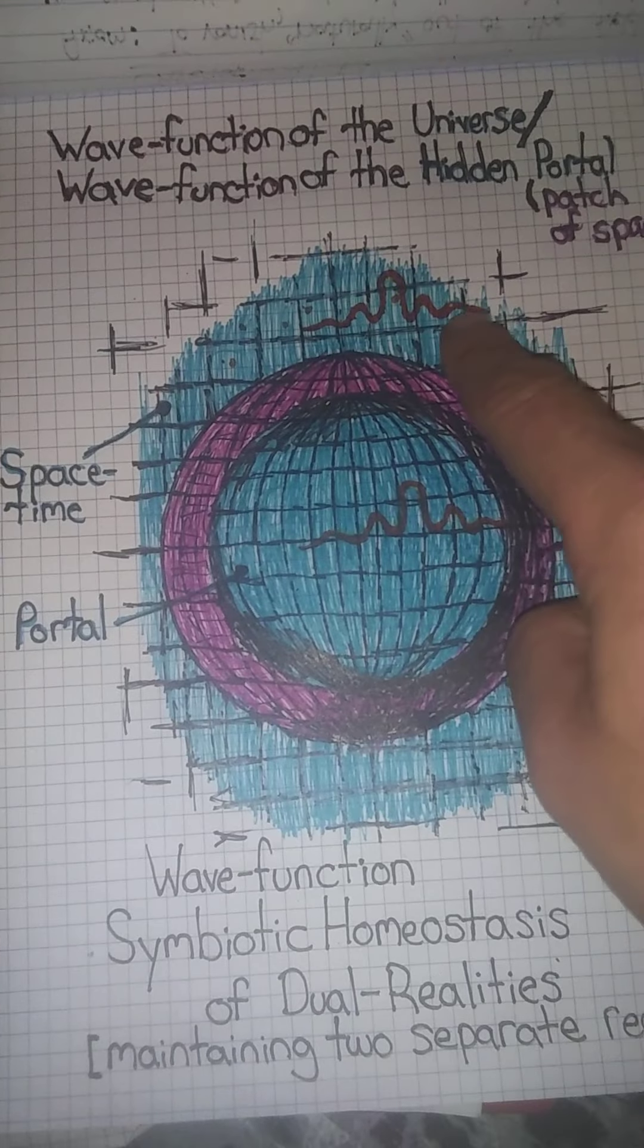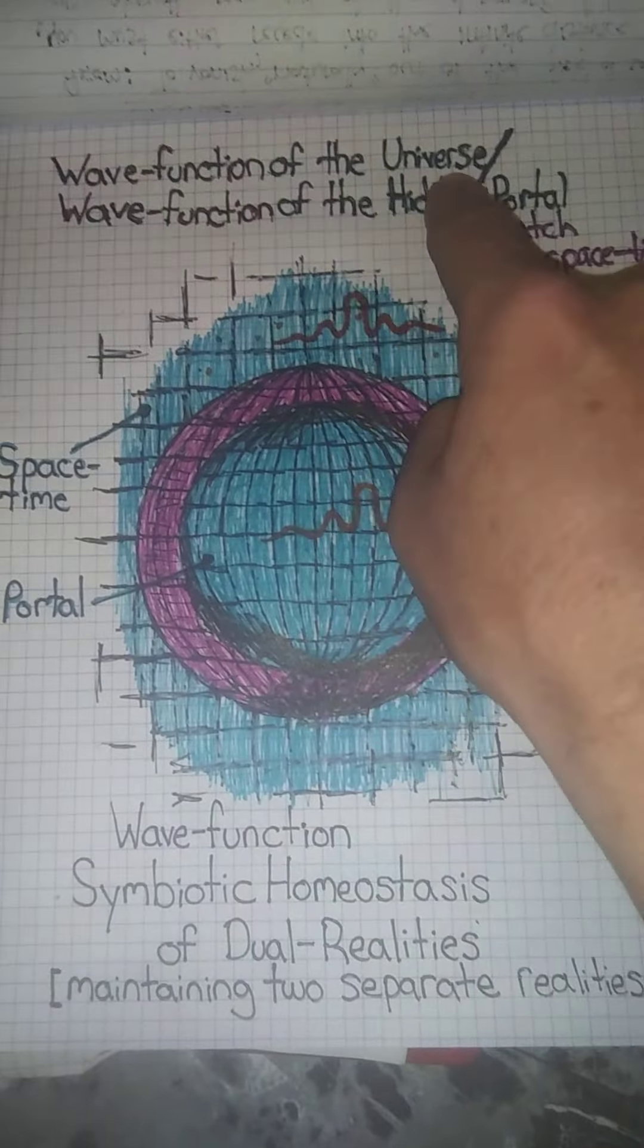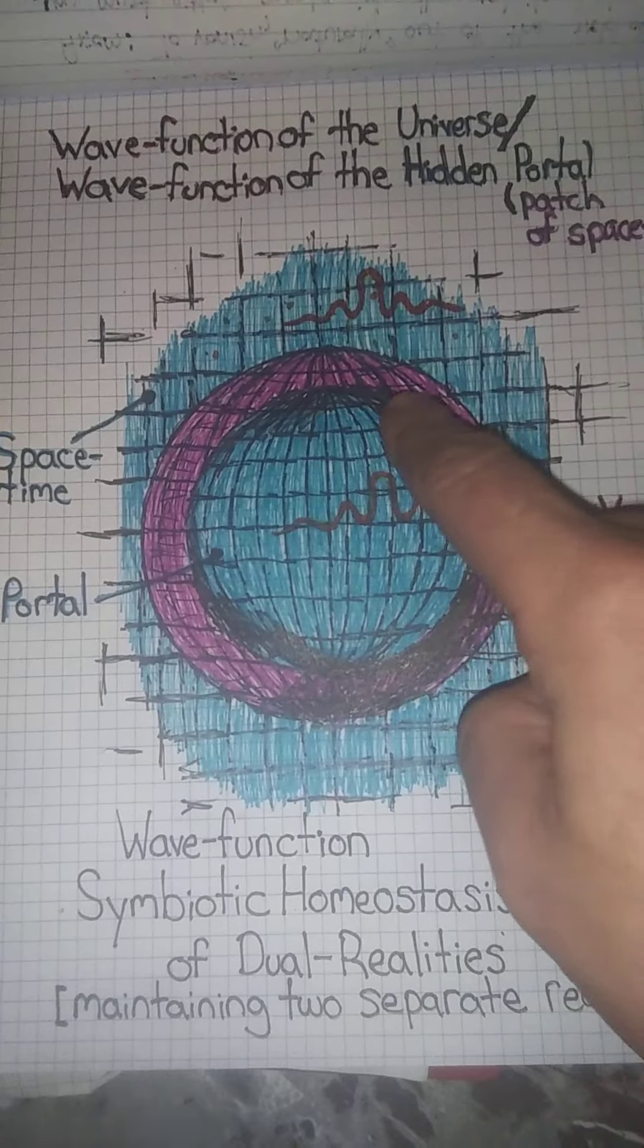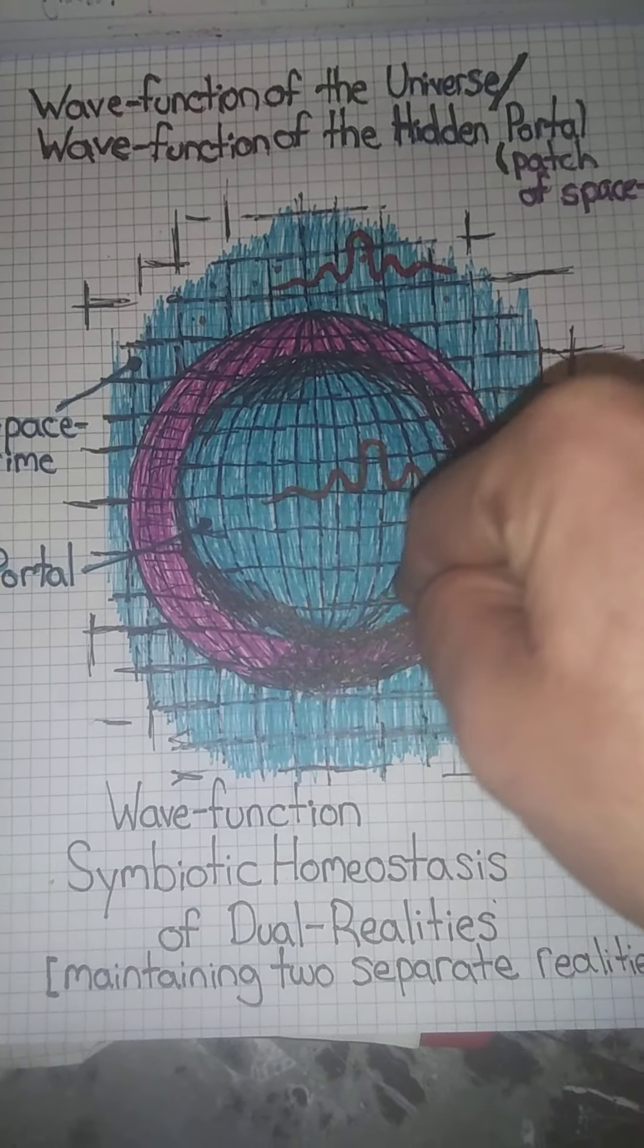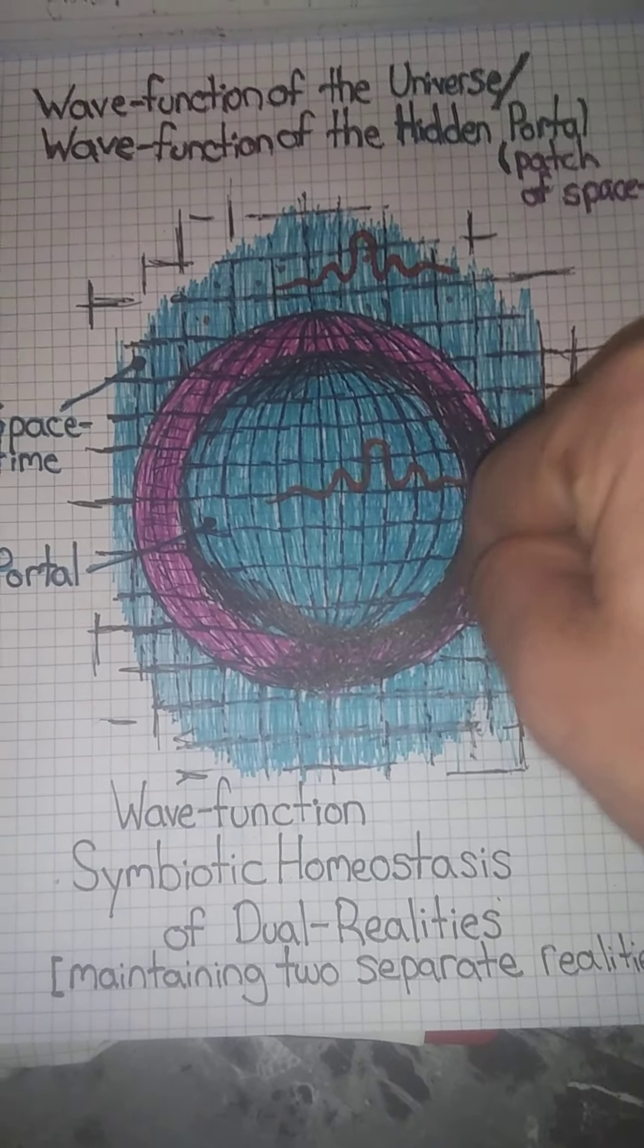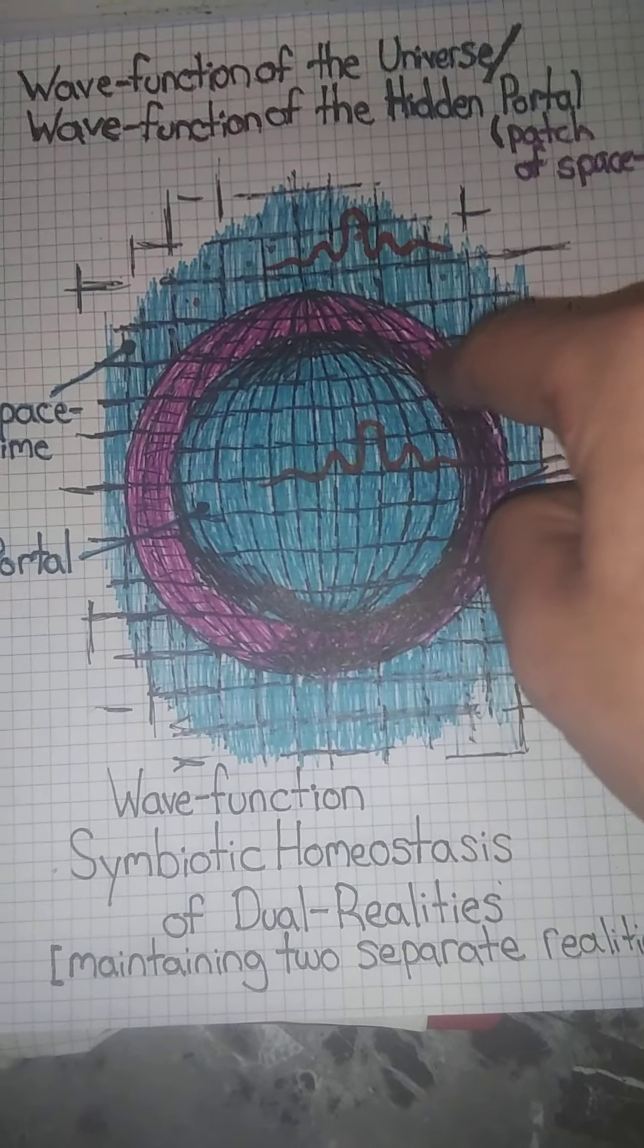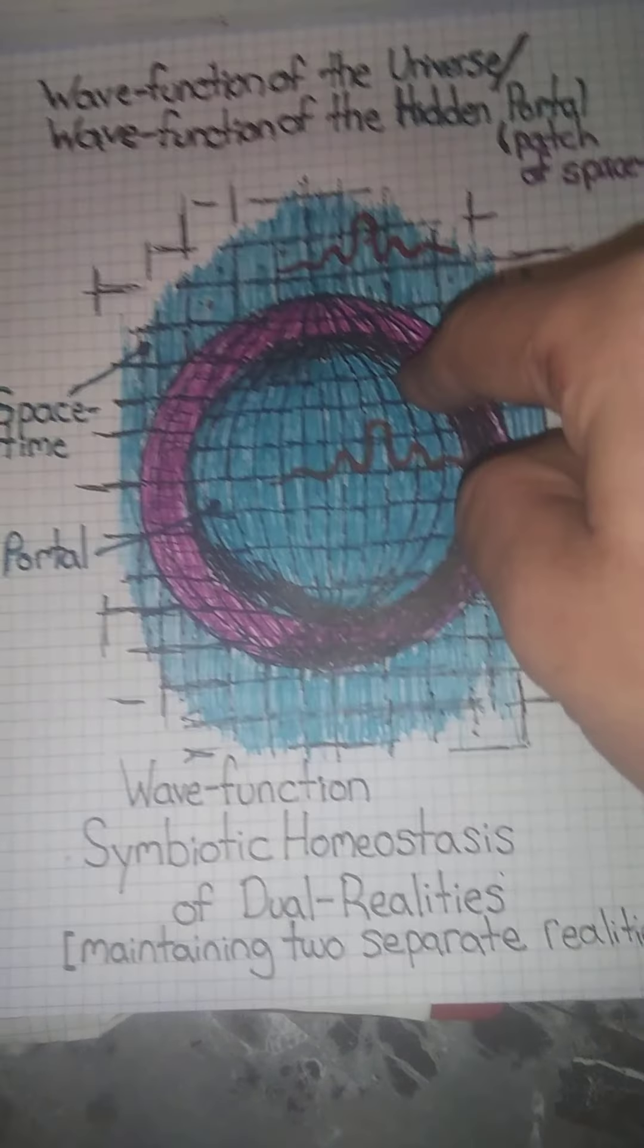The wave function of the universe, the wave function of the hidden portal, a patch of reality, just a patch of reality. Nothing too big, just something to fit in a person or people. You can only fit in one person in a telepresent, televisual portal. But I imagine in a real portal, you can fit in more people. More people can inhabit the same portal.